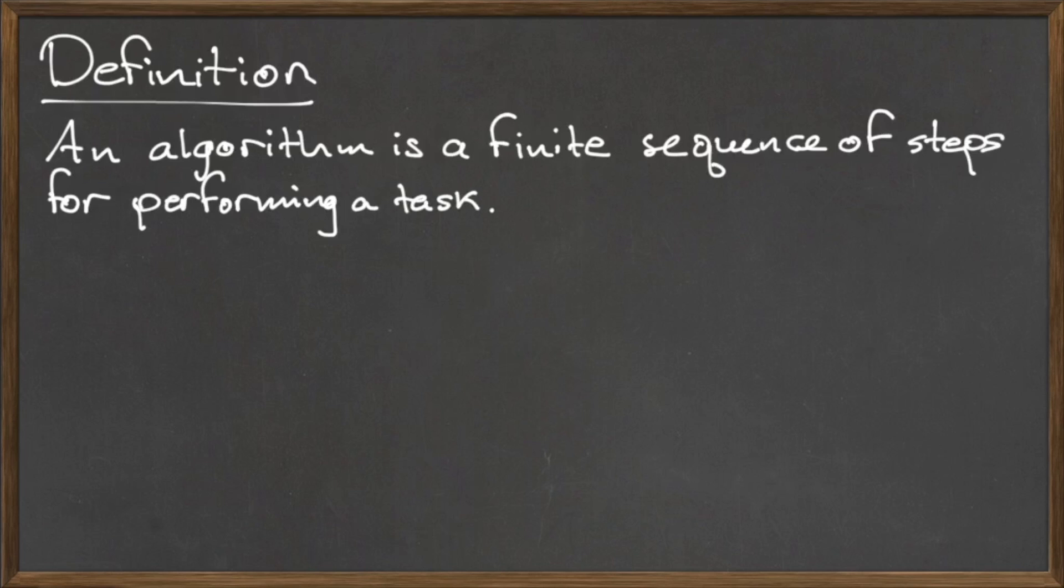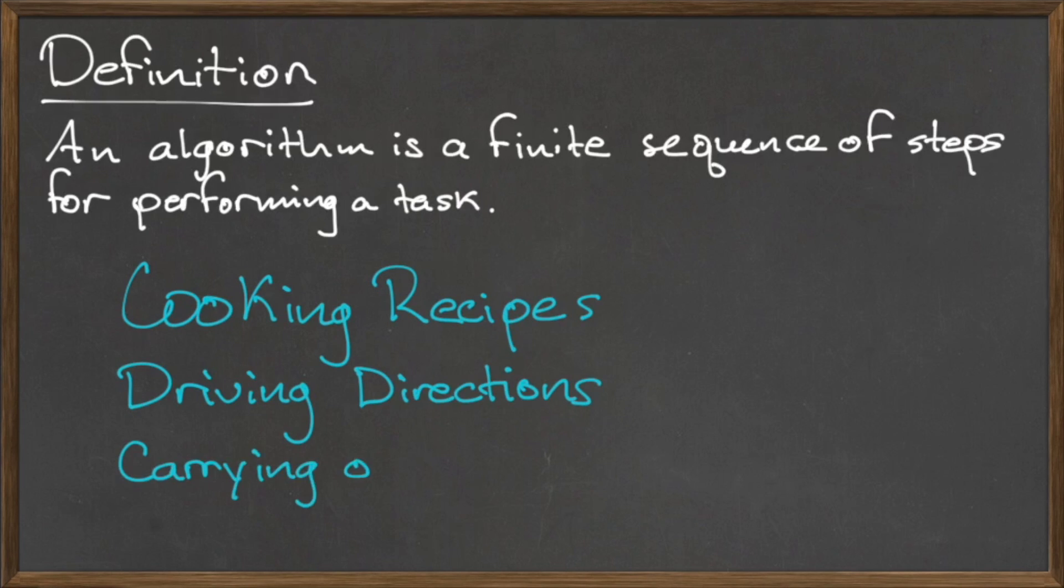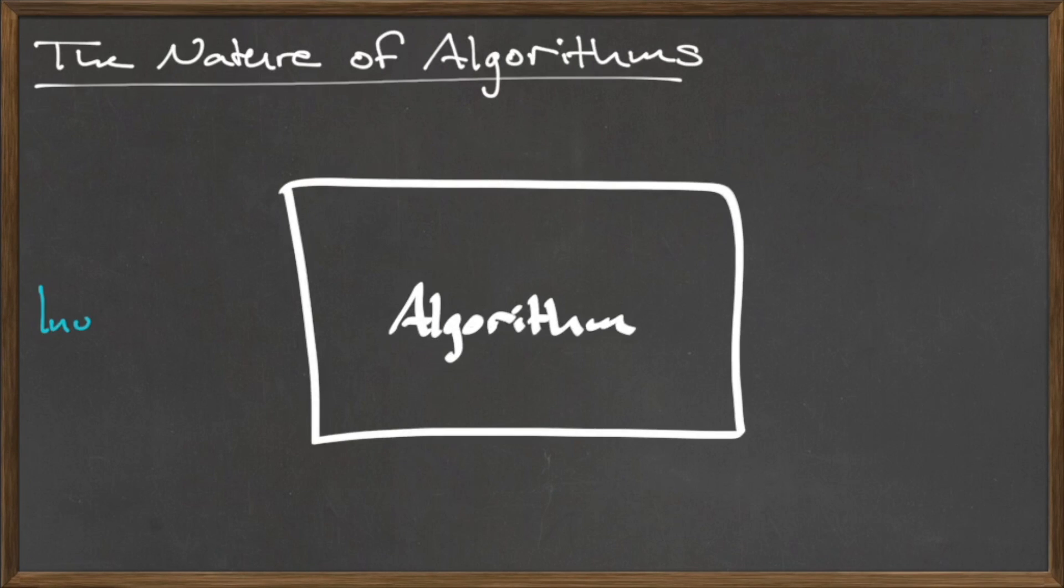Some examples of algorithms that we use in our everyday life are cooking recipes, driving directions, and for our purposes, carrying out a mathematical task. An algorithm consists of three parts, as illustrated by the diagram below: the input, the finite sequence of steps, and finally the output.